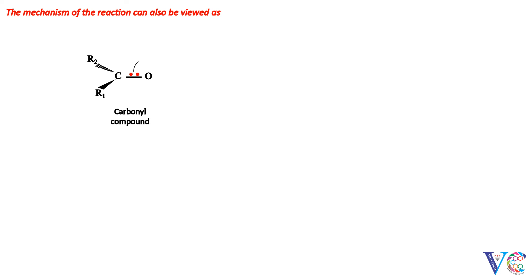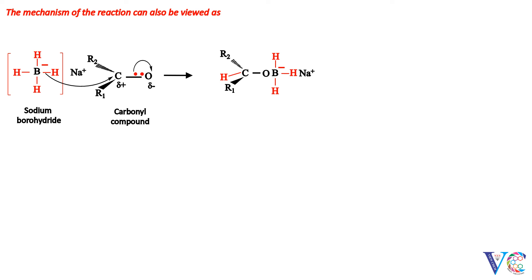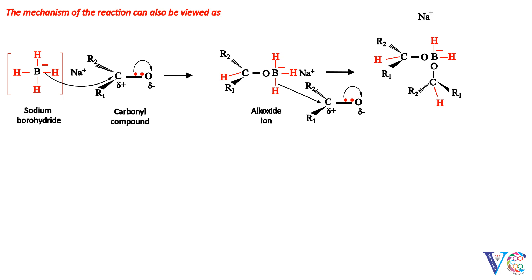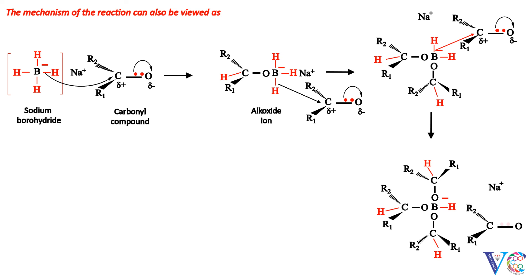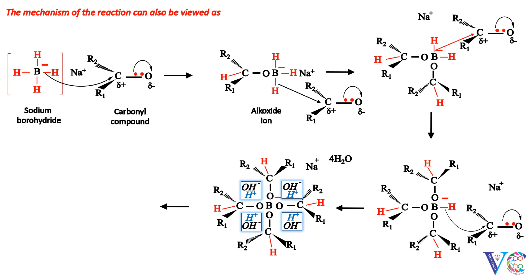The mechanism of the reaction can also be viewed as follows. A hydride ion attacks the partially positively charged carbon of the carbonyl group, forming an alkoxide ion. Next, the partially positively charged carbon of another molecule of carbonyl compound is attacked by a hydride ion. In this manner, partially positively charged carbon atoms of two more molecules of carbonyl compound will be attacked by two more hydride ions. At this juncture, hydrolysis of this complex yields four molecules of alcohol.